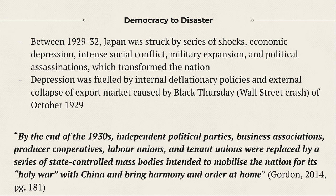So how do we go from democracy to disaster? Between 1929 and 1933, Japan was struck by a series of shocks: economic, social conflict, military expansion, and political assassinations. These culminated in transforming the nation, so that by 1932 it was very different from what it had been before 1929. The depression was fueled by internal deflationary policies, which we'll look at in a moment.